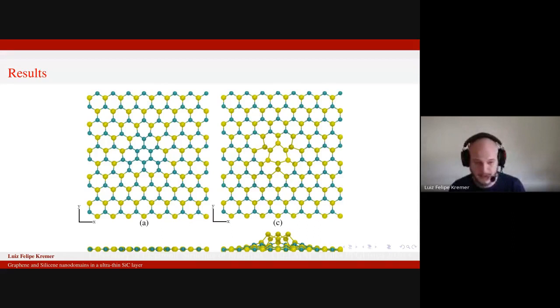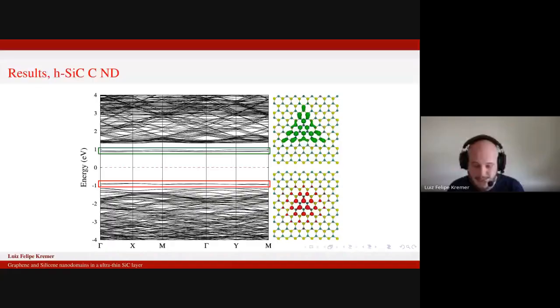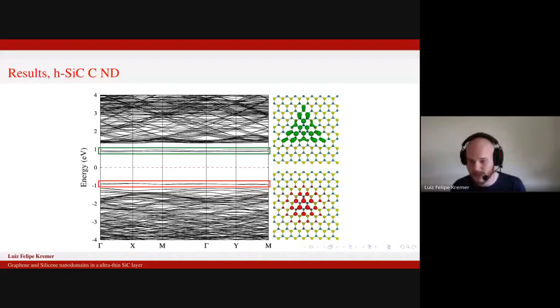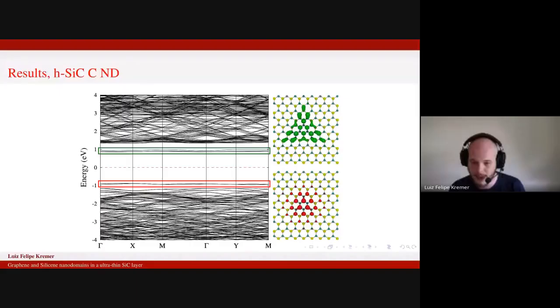When we look at the band structure with the graphene domain, you can see now in the red and green boxes that we have new electronic states inside the band gap now. And as you can see on the right, in the charge density surfaces, these new levels are from the nanodomain, originated from the nanodomain, and they are really well defined there.